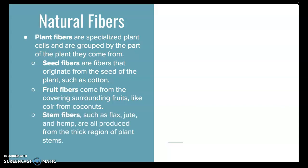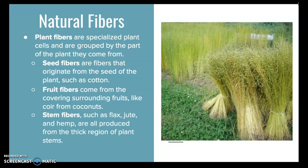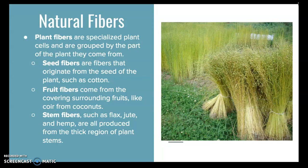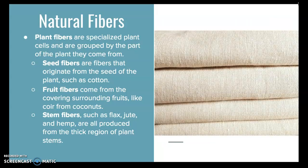Stem fibers such as flax, jute, and hemp are all produced from the thick region of plant stems. Here's an example of flax, which makes different types of linens.